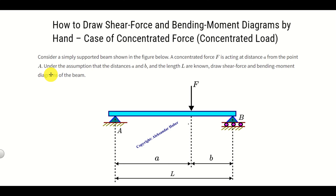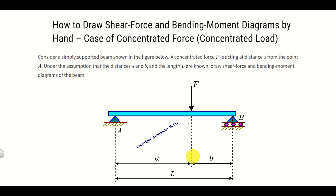Here's the problem formulation. Consider a simply supported beam with a concentrated force F acting at distance A from point A. Under the assumption that distances A, B, L as well as the magnitude of force F are known, draw the shear force and bending moment diagrams of the beam.